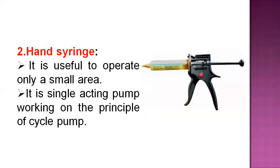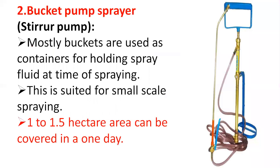The second type is the hand syringe. This is a small equipment used to operate over only a small area where pesticide application is done. It is a single-acting pump working on the principle of a cycle pump and is used to easily control hidden insects in that area.